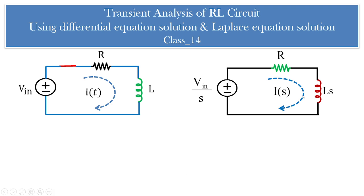Whether using the differential approach or the Laplace approach, the current through the RL circuit is obtained as i(t) = Vin/R × (1 - e^(-R/L × t)). This is the transient current when DC is applied to an RL circuit via a switch. The switching condition is shown here, and in the Laplace approach we assume current flows in the circuit at t greater than 0.